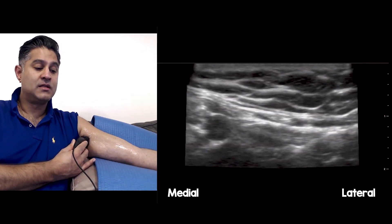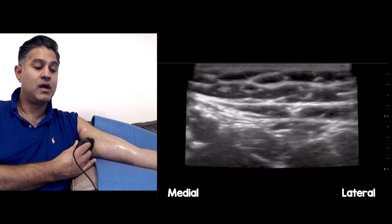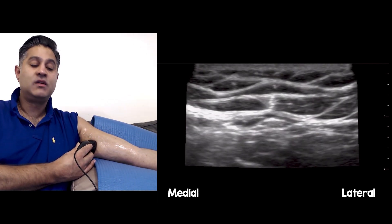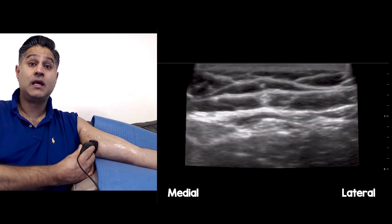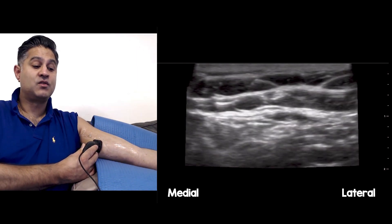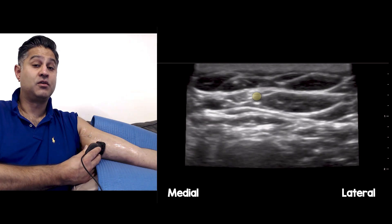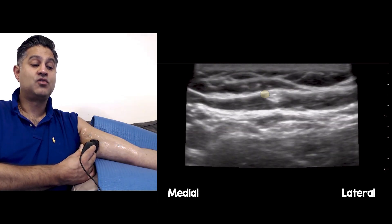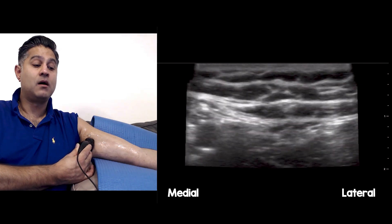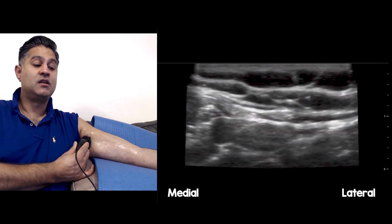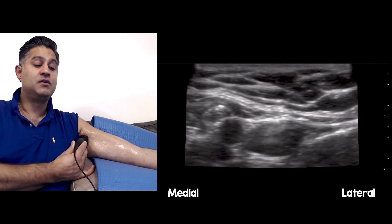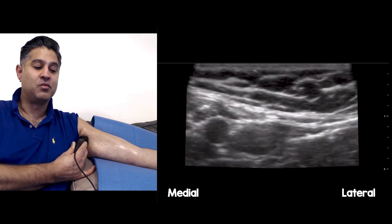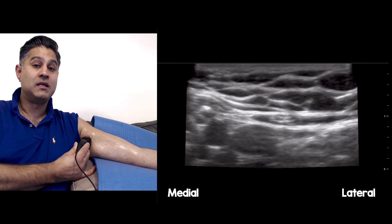I'm going to look in the centre of the screen as I start to slide away. Hopefully you're starting to see a structure relatively consistently superficially on the screen — right in the centre — that is the medial antebrachial cutaneous nerve. Watch that structure as I go back up; it's going to dive down and lie really close to the median nerve, which is often why you get it during an axillary brachial plexus block, but it is possible to miss it.